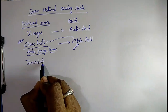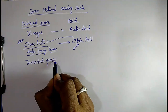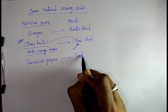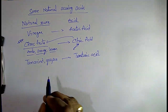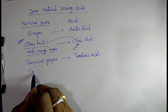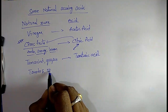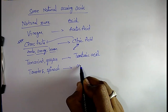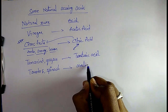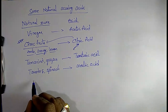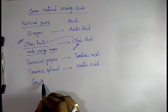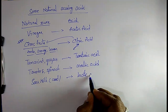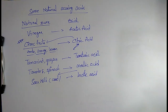In tamarind and grapes, we get tartaric acid. In tomatoes and spinach, we get oxalic acid. In sour milk, that is curd, we get lactic acid.